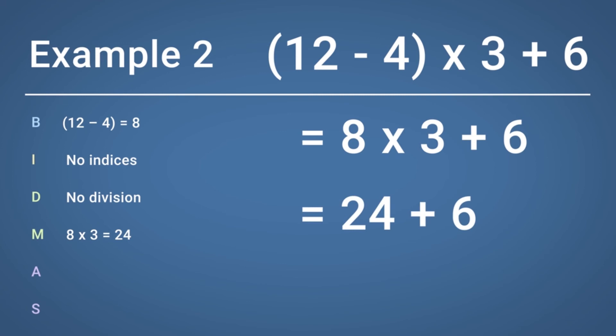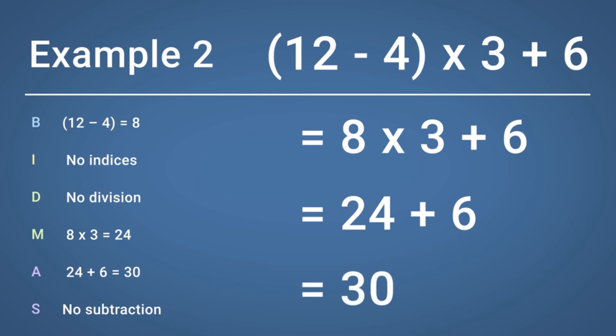Finally, we can calculate any remaining addition or subtraction sums. We are only left with the addition sum of 24 add 6, which equals 30. There are no more operations remaining, so the final answer is 30.